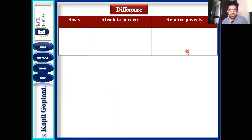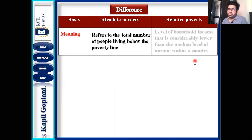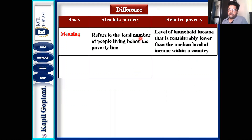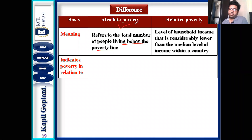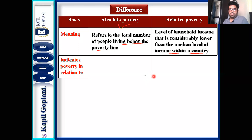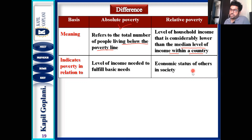Now the differences between absolute poverty and relative poverty. First, absolute poverty refers to the total number of people living below the poverty line. Relative poverty refers to those whose income is considerably lower than the median level of income within a country, which will differ in every country. The indication of absolute poverty is the level of income needed to fulfill basic needs; for relative poverty, it is economic status relative to others in society.